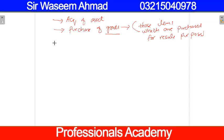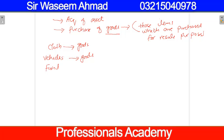So if the business is selling clothes, cloth is considered as goods. If it is a vehicle showroom, vehicles are goods. If it is a furniture showroom, furniture is considered as goods. Now you have to distinguish between two types of furniture or two types of vehicles.